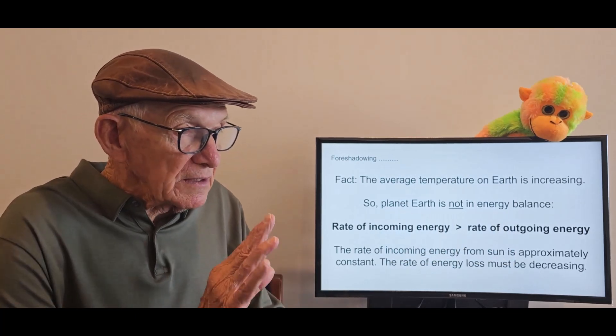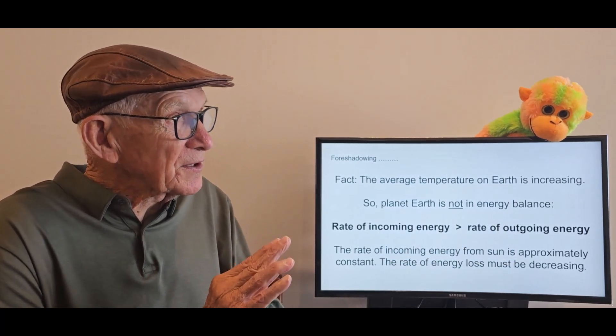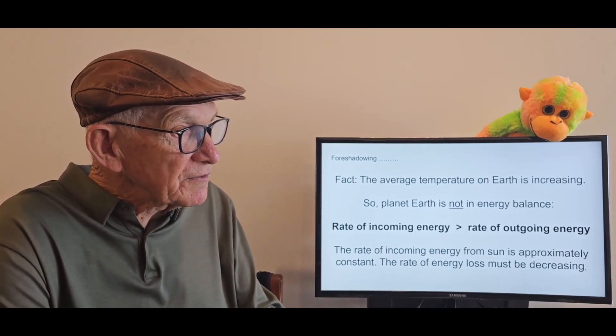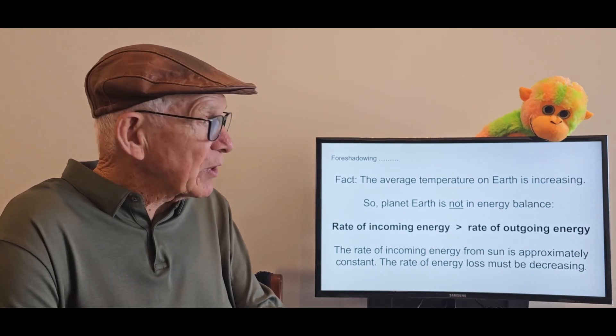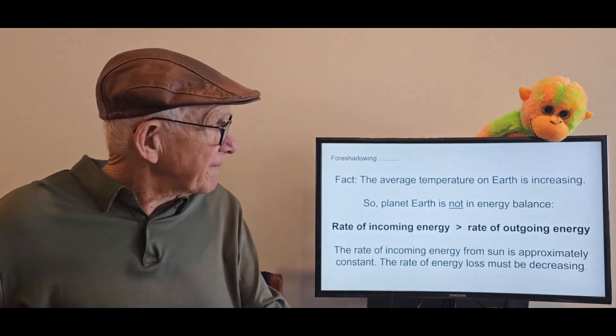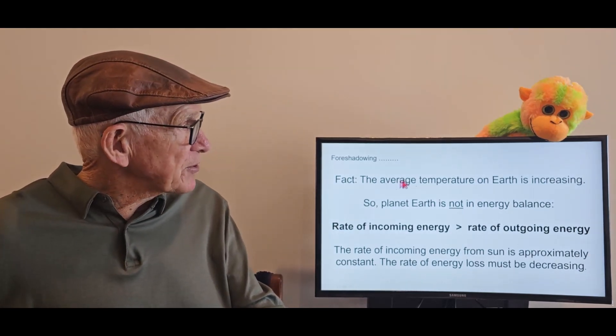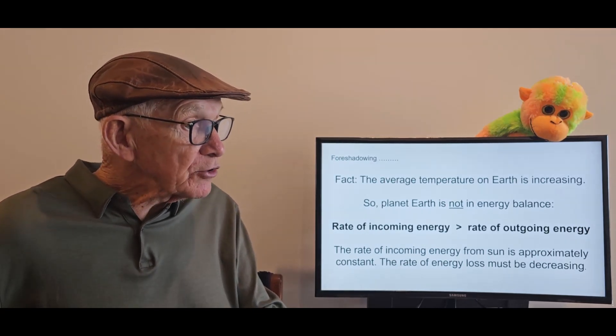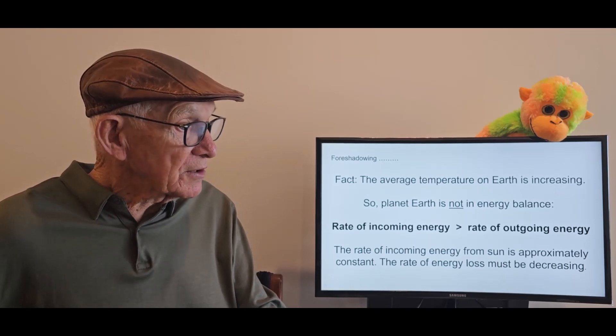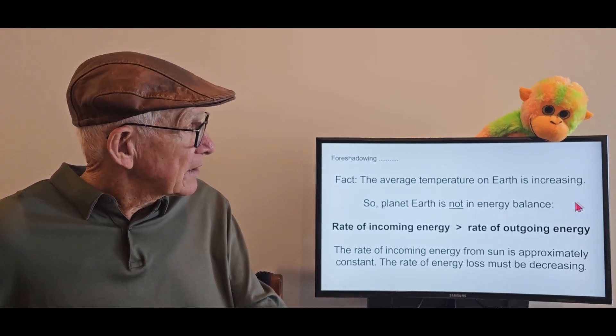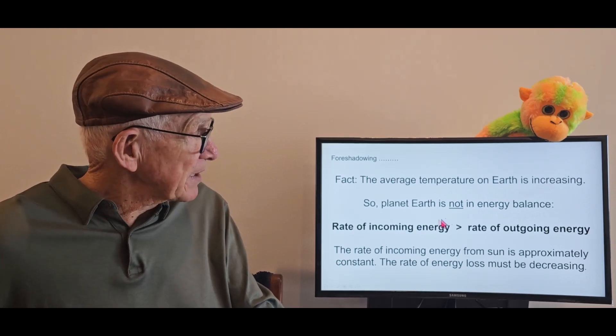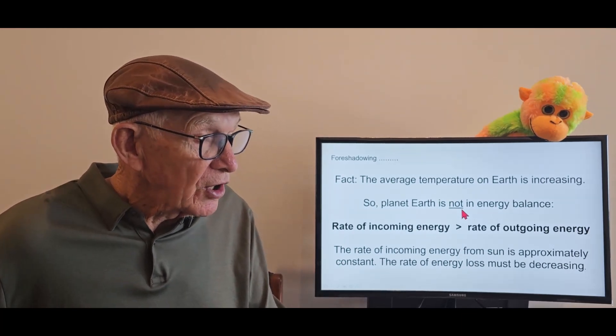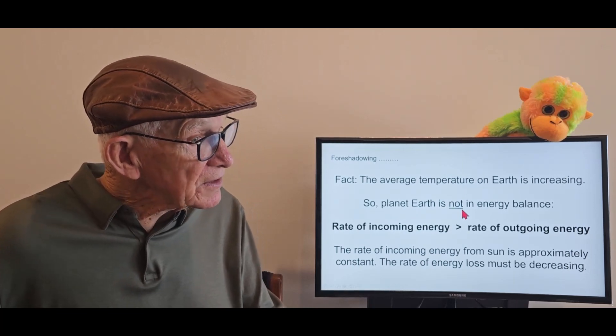Now, that's it. I simply want to get across the idea of what energy balance or out of balance is. It's so important. But foreshadowing where we're going. Here's a fact. The average temperature on Earth is increasing. This is a measurable, measurable phenomenon. This is observable. So, if the temperature is changing, in fact, it's going up, planet Earth is not in a condition of energy balance. It's not in a steady state.